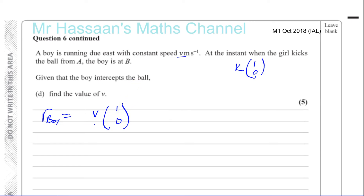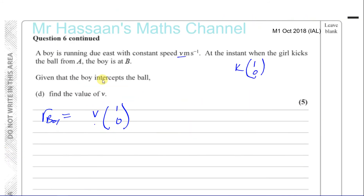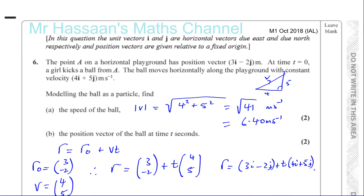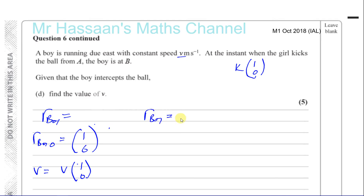The boy is at B at time zero, so the position vector of B is (1, 6). Therefore the position vector of the boy at time t is (1, 6) plus t times (V, 0). He's running at constant speed V due east.